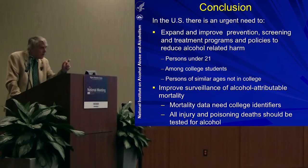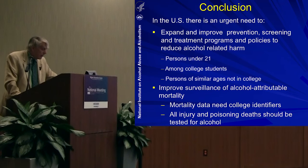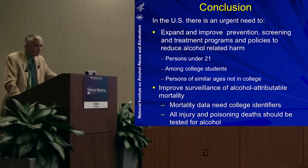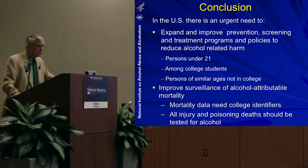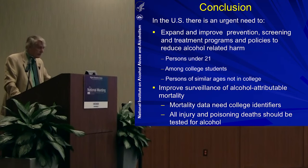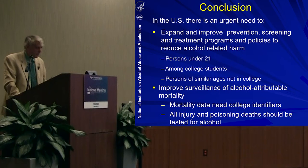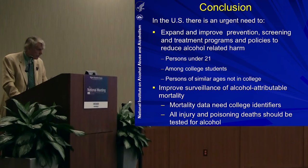We need to improve our surveillance of alcohol-attributable mortality. None of our national data sets on alcohol-related deaths include college identifiers, so our estimates of how many college students die are just that — estimates. I think we need college identifiers, and I think all injury and poisoning deaths in the United States should be tested for alcohol so that we have a strong yardstick to measure whether we're making progress.